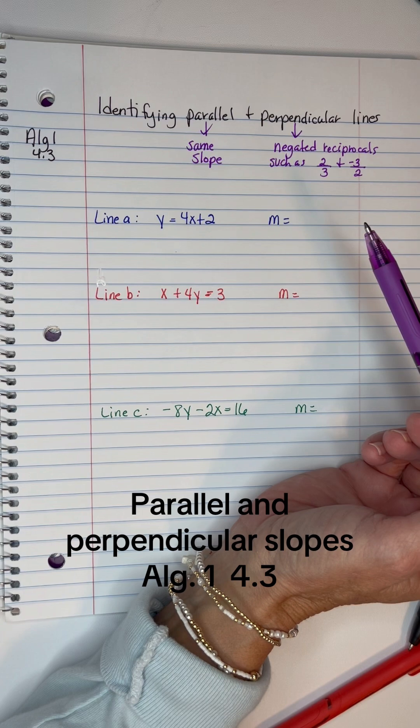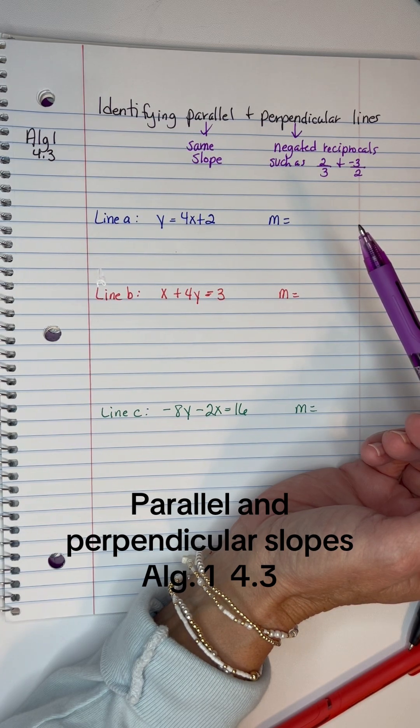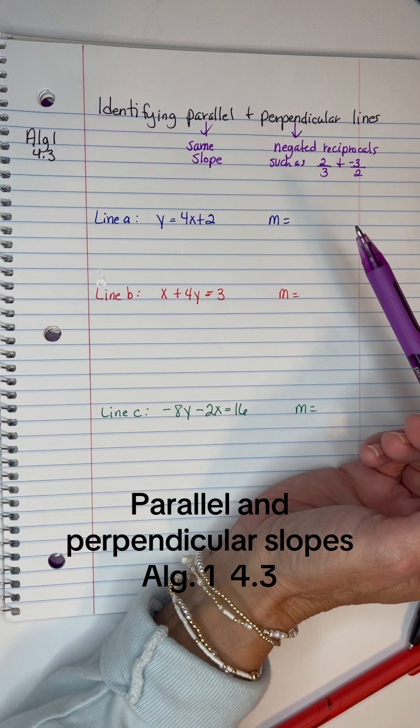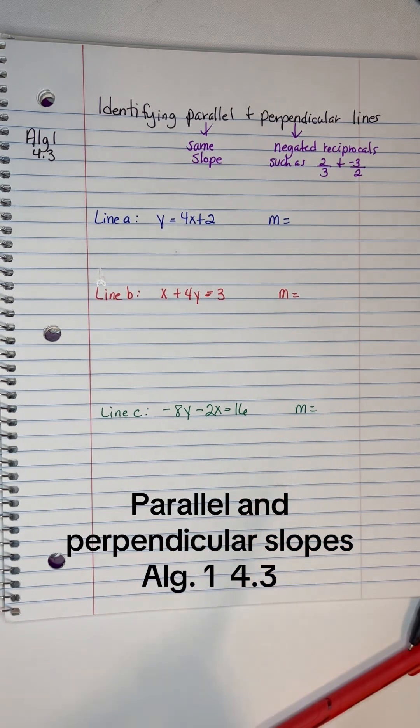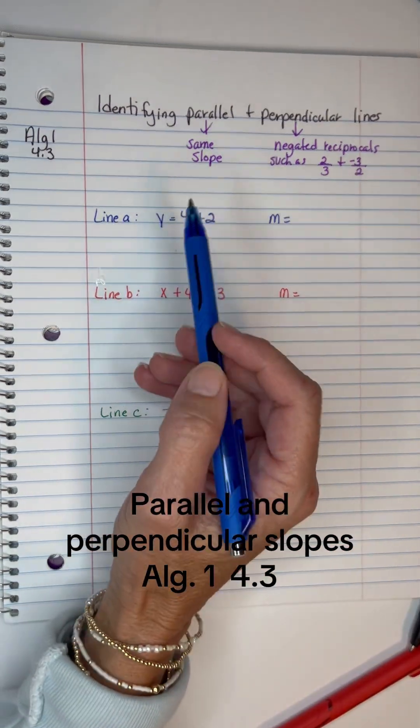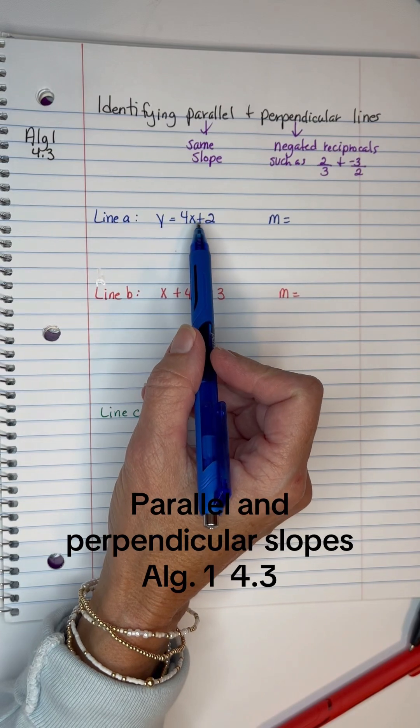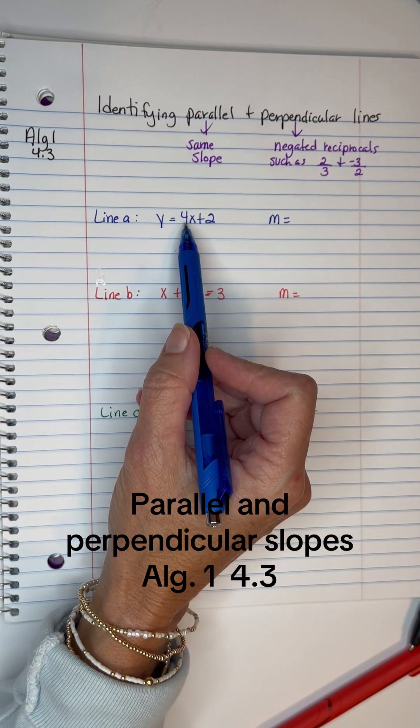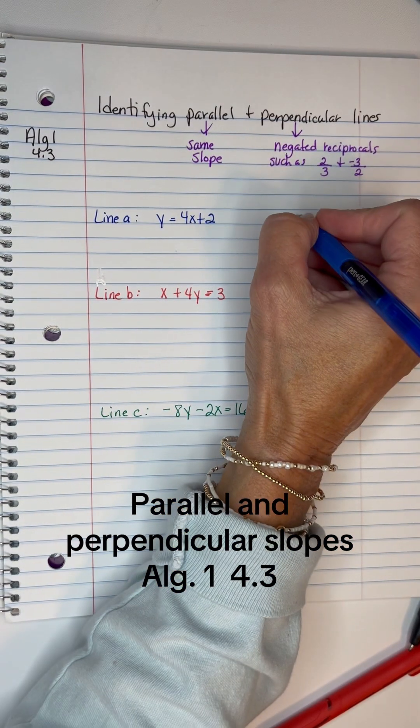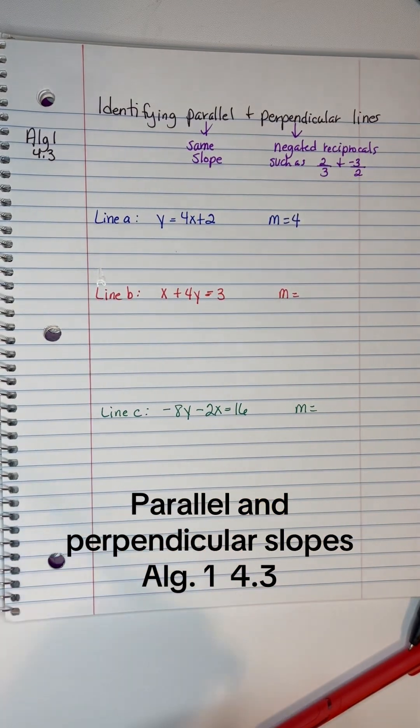Non-vertical lines are perpendicular only if their slopes are negated reciprocals, and vertical lines are always perpendicular to horizontal lines. When we look at this first line, it's in y = mx + b form, so we can identify the slope as 4. That one was fast and easy.